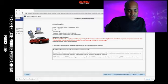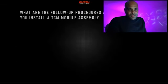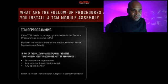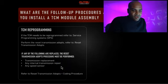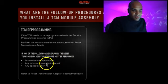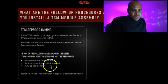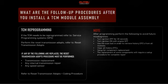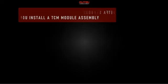Once you get the completion page, it's a good idea to print it out for your customer's peace of mind. Now what are the follow-up procedures? After installing a TCM assembly, if the TCM needs to be reprogrammed, refer to service programming and perform the 'Reset Transmission AdOps.' This must be performed for transmission replacement, any internal transmission repair, or any speed sensor replacement. After programming, perform the listed steps to avoid any misdiagnosis — it's a manual setup for component replacement.